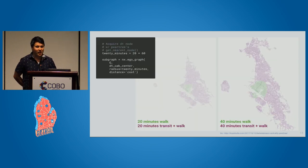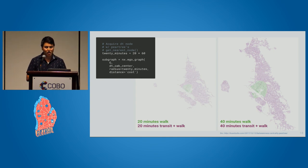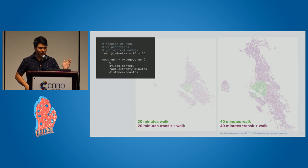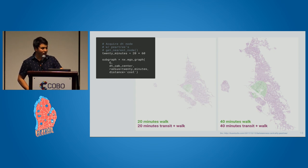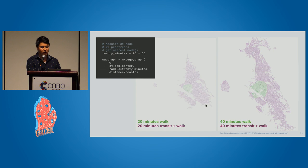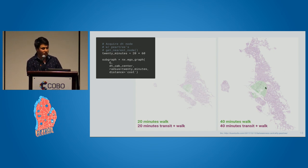Once you have that instantiated graph, you can do an ego graph — essentially the computation of an isochrone on that network graph with NetworkX. It's actually pretty fast and simple — you could do this all in a few lines in a Jupyter notebook. In green in the center is your walk network, and in pink outside is the transit network. You can see the difference in your walk shed within 20 minutes versus your transit shed, and with 40 minutes you can see most of the East Bay.